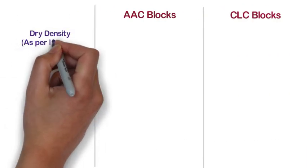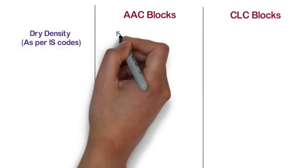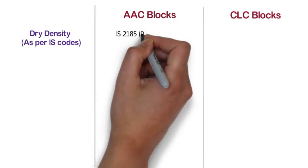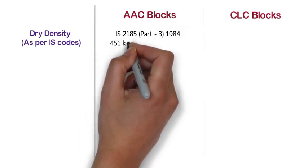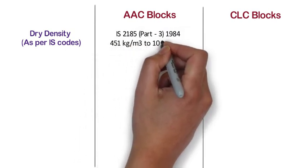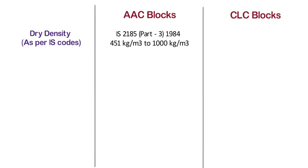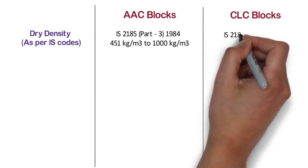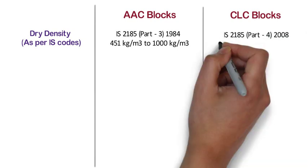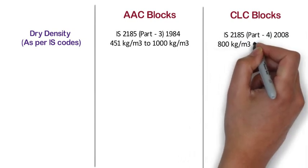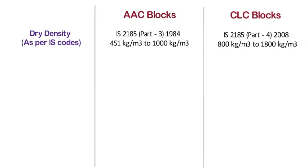Dry density as per IS codes. As per IS 2185 Part III 1984, the density of AAC blocks varies from 451 kg/m³ to 1000 kg/m³. Whereas, as per IS 2185 Part IV 2008, the density of CLC blocks varies from 800 kg/m³ to 1800 kg/m³.